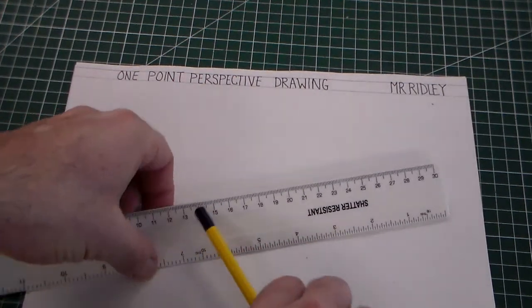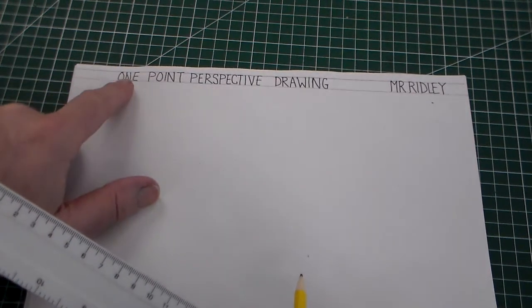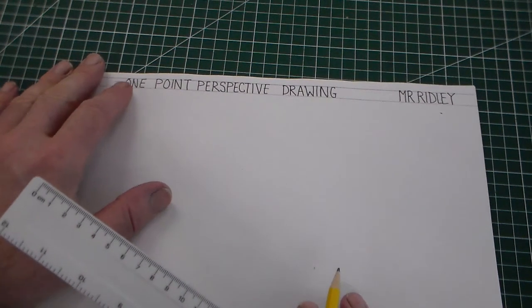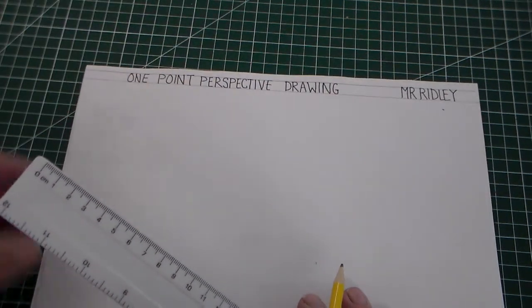I've drawn two lines one centimeter apart and put a title there which is one point perspective drawing. I also put my name, you can put your name.